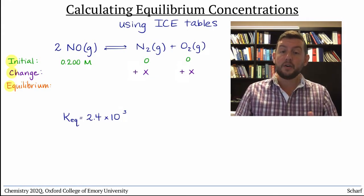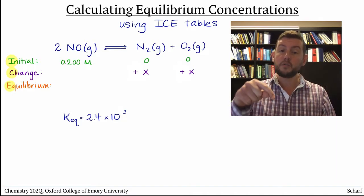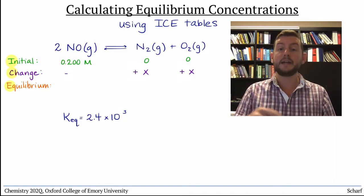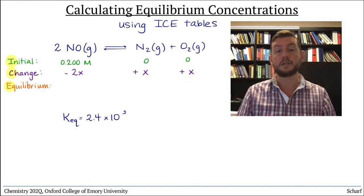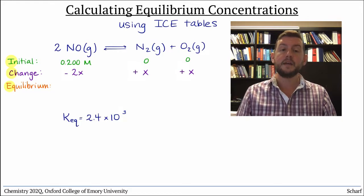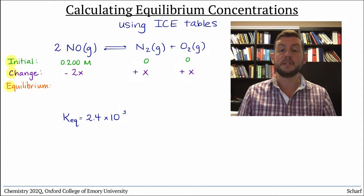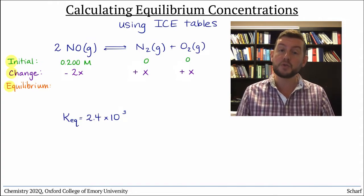While N2 and O2 are forming, we know that the concentration of NO must be decreasing, and at twice the rate that the products are forming, because there's a stoichiometric coefficient of 2 on the reactant. This row illustrates how the concentrations of all species will change as we approach equilibrium.